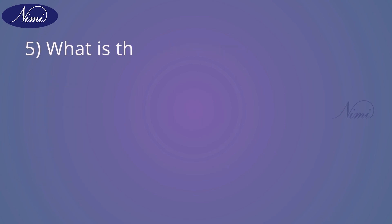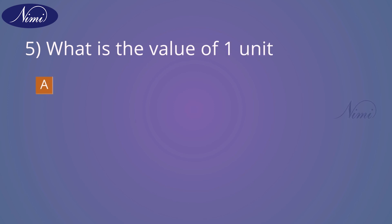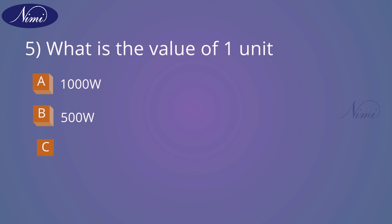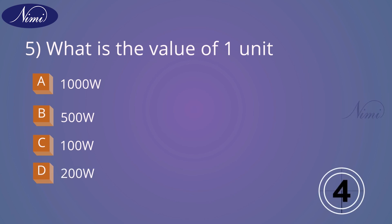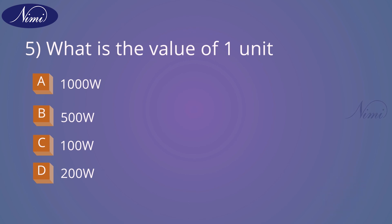Question number five: What is the value of one unit? Options are — A: 1,000 watt-hours. B: 500 watts. C: 100 watts. D: 200 watts. And the answer is A — 1,000 watt-hours.